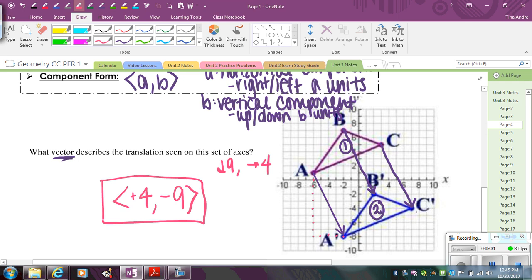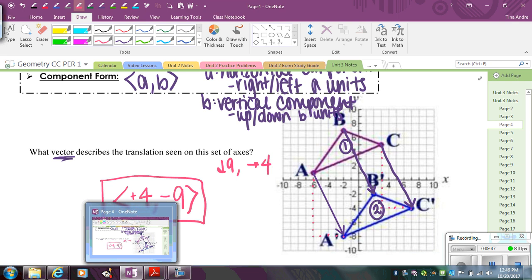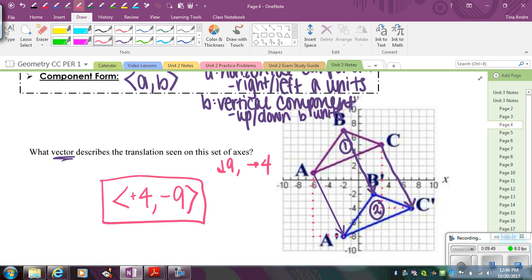And you can check it. If I go from C to C prime, it should be the same. 1, 2, 3, 4, 5, 6, 7, 8, 9. And then over 1, 2, 3, 4. And remember, I switched the order of these because it's always the horizontal movement, then the vertical movement. Okay? So that's it. Go ahead and try the check your understanding problems.